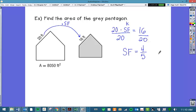So I'm going to take my old area. I'm not multiplying it by 4 over 5. I'm multiplying it by 4 over 5 squared. So 8,050 times 4 over 5 squared is 5,152 square feet. So my new area is 5,152.